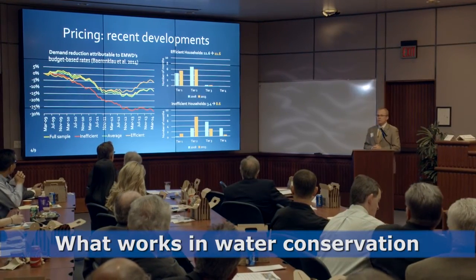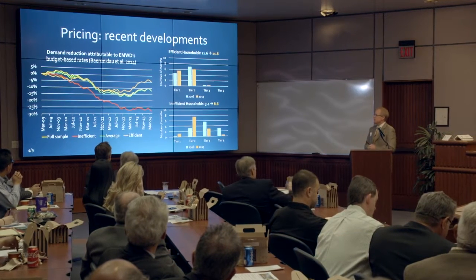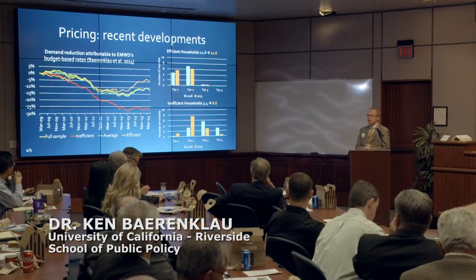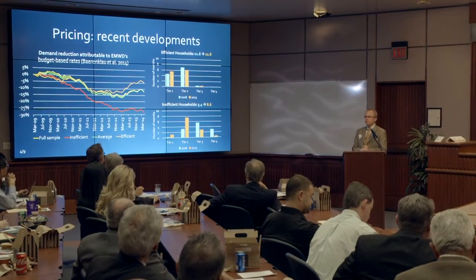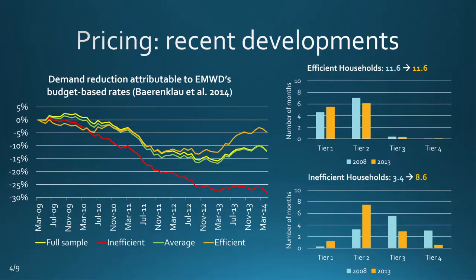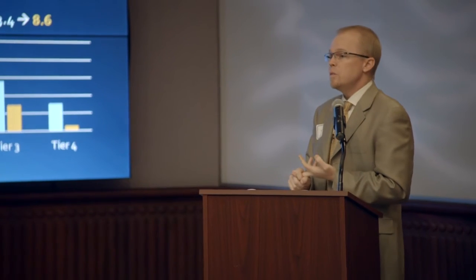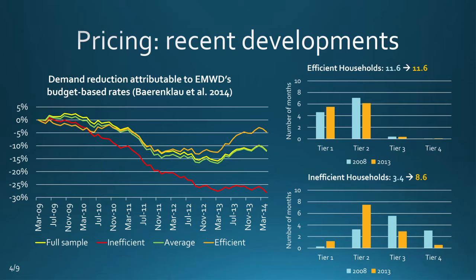These graphs summarize the study that UC Riverside did with Eastern Municipal Water District. We undertook a demand modeling analysis to figure out how much of the observed decline in household-level water demand was due to their adoption of allocation-based rates. The rate structure impinged upon inefficient households' behavior much more than average — we think those inefficient households are now about 25% to 30% below where they would be under an equivalent uniform rate structure. For efficient households, they were originally spending about 11.5 months out of the year within their budget, and that didn't really change under allocation-based rates.